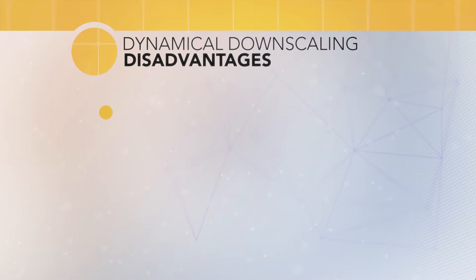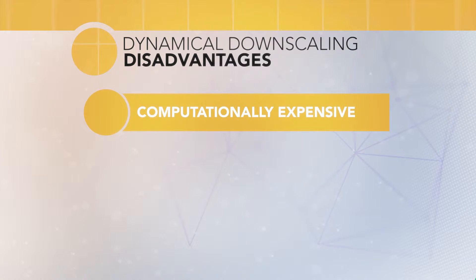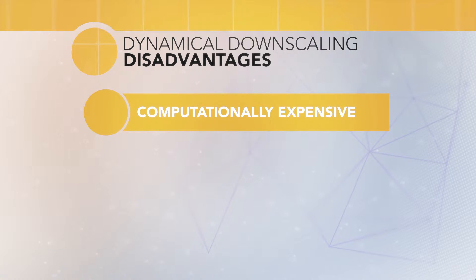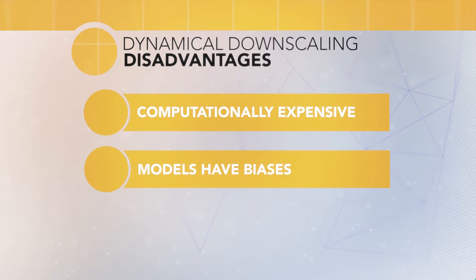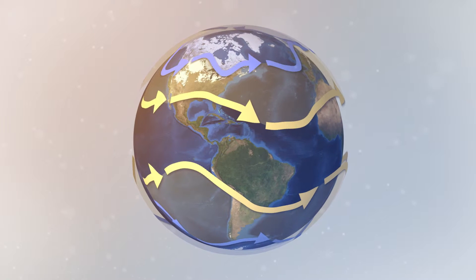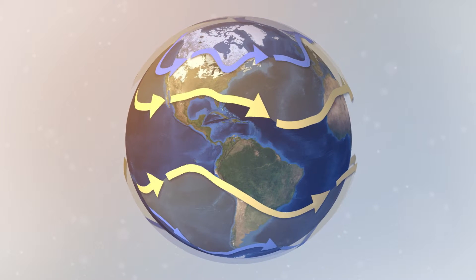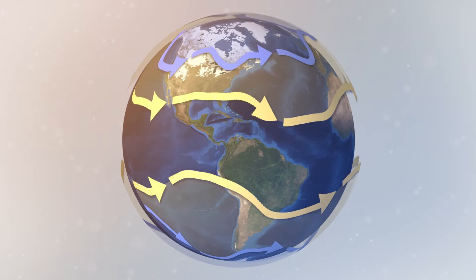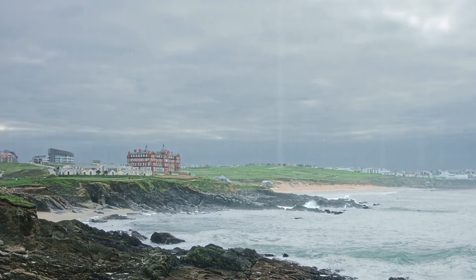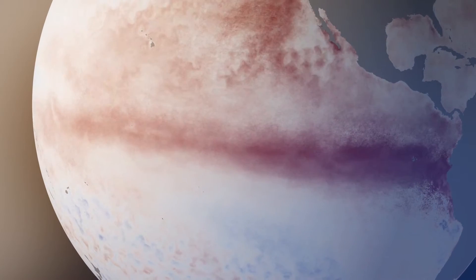But no procedure is without disadvantages. First, regional climate modeling is computationally expensive — that is, it requires a large amount of computing power and resources. Second, all models have errors or model biases within them. These biases include incorrectly simulating features of the climate system, such as the position of the jet stream, the climatological temperature and rainfall in a certain location, or specific phenomena like El Niño. Using a regional climate model introduces new biases that have to be evaluated and compensated for when analyzing the output.